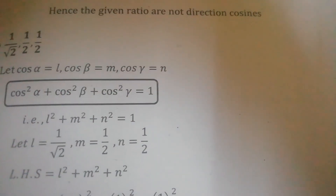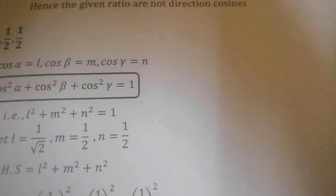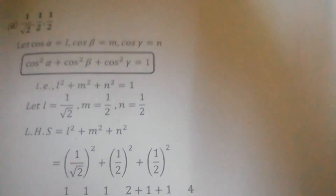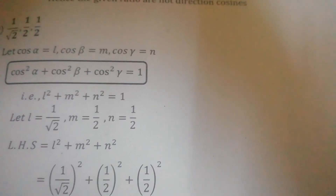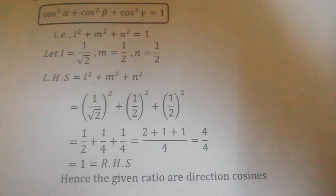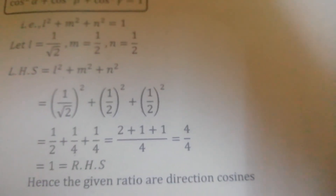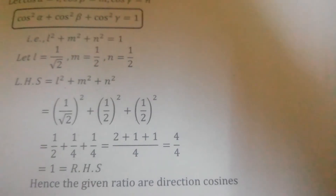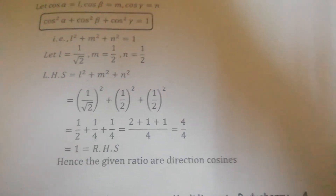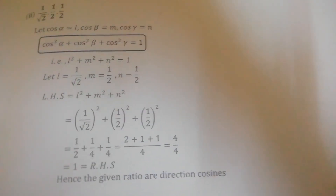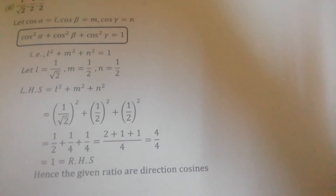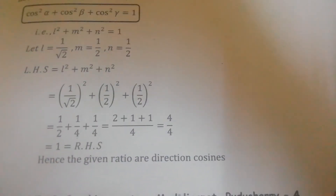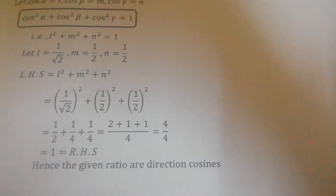Cos gamma equals N. So cos squared alpha plus cos squared beta plus cos squared gamma equals 1, that is L squared plus M squared plus N squared equal to 1. Substituting the values: (1 by root 2) squared plus (1 by 2) squared plus (1 by 2) squared gives 1 by 2 plus 1 by 4 plus 1 by 4. Taking LCM 4: 2 plus 1 plus 1 equals 4, so 4 by 4 equals 1. The answer is exactly 1, so these are direction cosines.